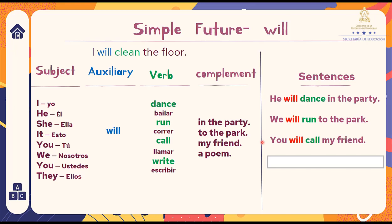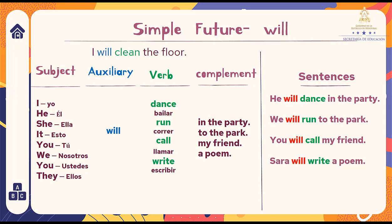Remember, we can use names instead of pronouns. In this example I'll use Sara, which is a 'she'. Sara — the auxiliary will — the verb 'write' — the complement 'a poem'. Sara will write a poem.